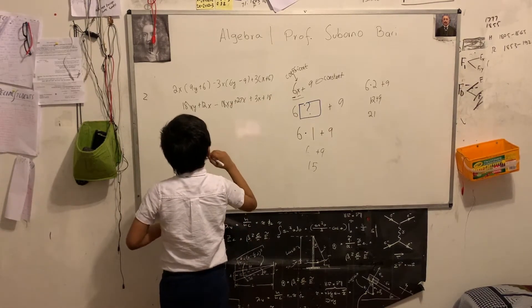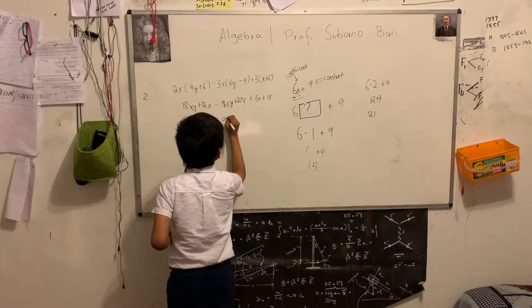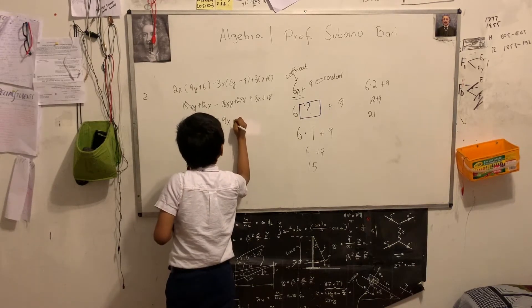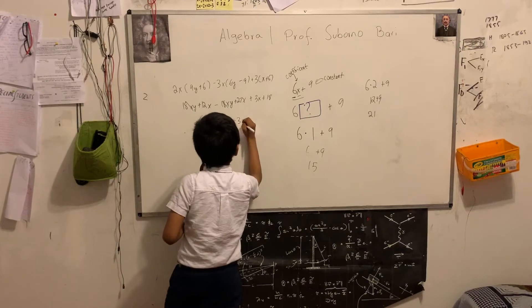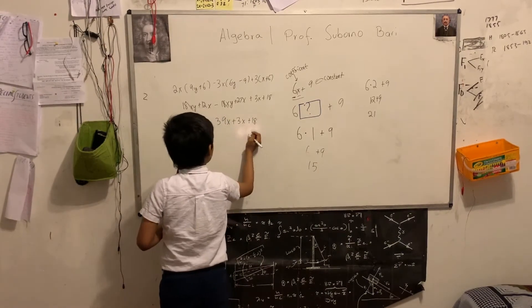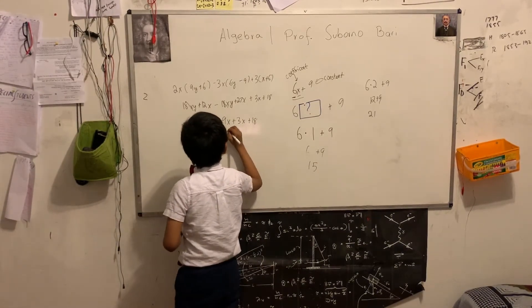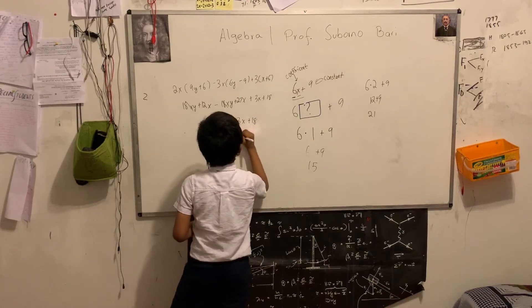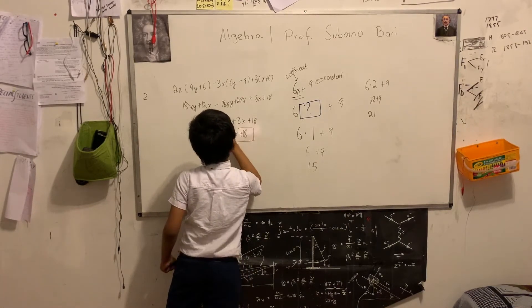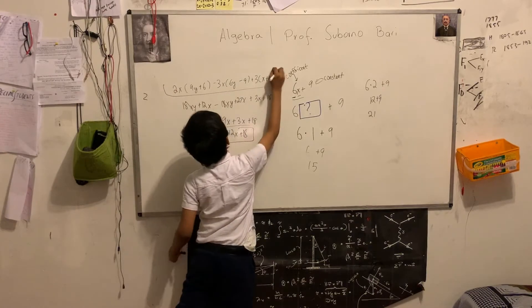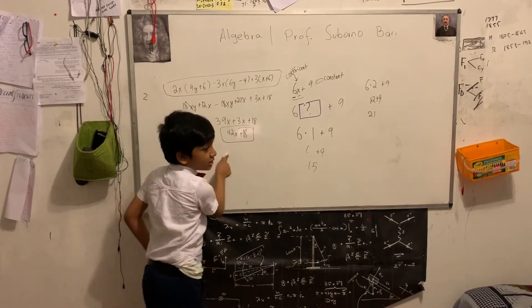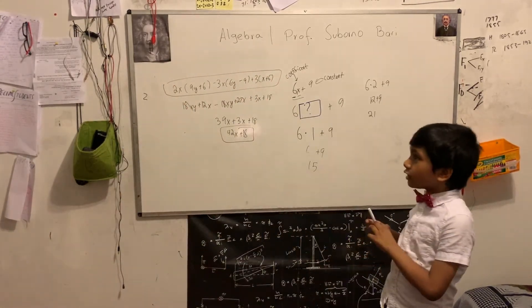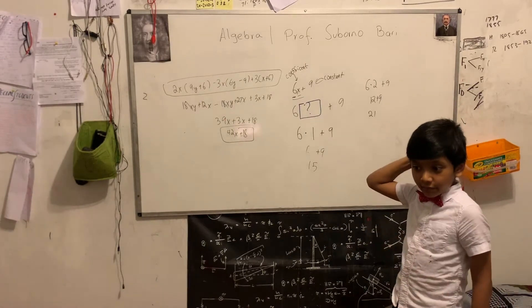12 plus 27 is going to be 39x. And then we have plus 3x plus 18. So that's going to be 42x plus 18. Look. We simplified this to do this. Isn't that incredible? The language is algebra.